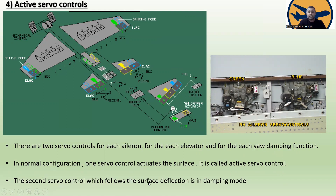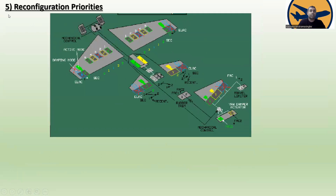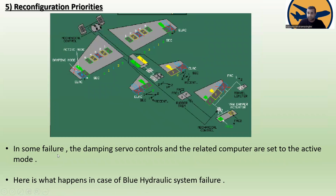The second servo control follows the surface deflection in damping mode. When only the manual pitch trim is available, the centering mode is applied to the elevator, and the actuators are hydraulically maintained in neutral position.